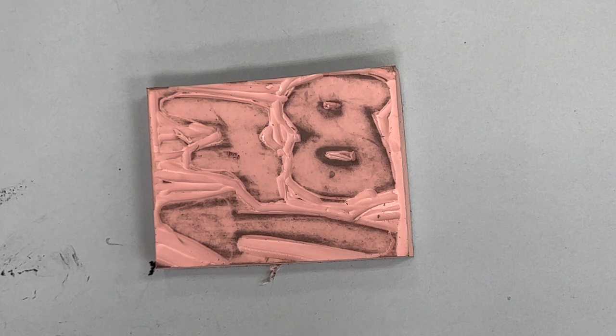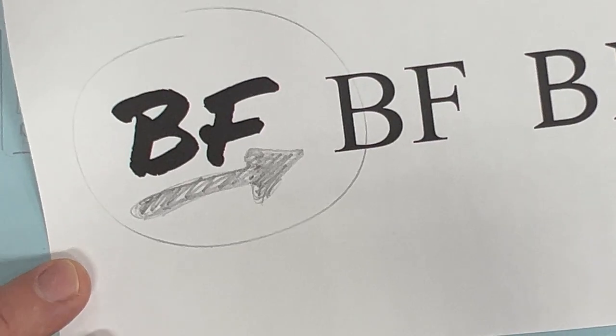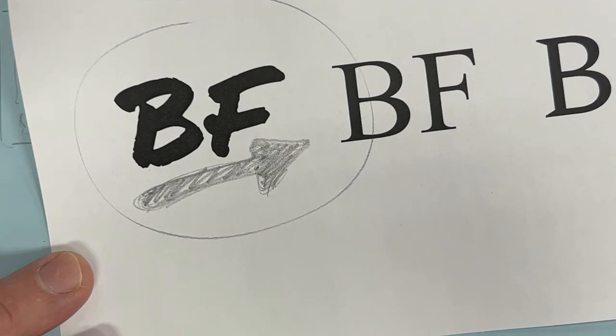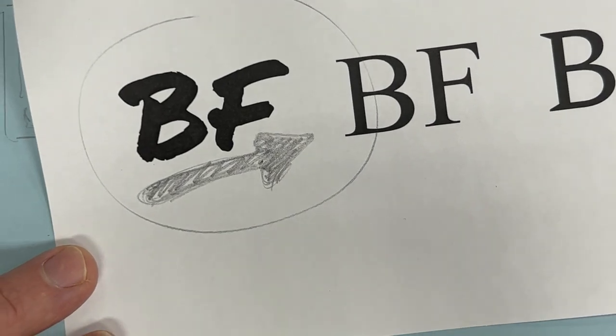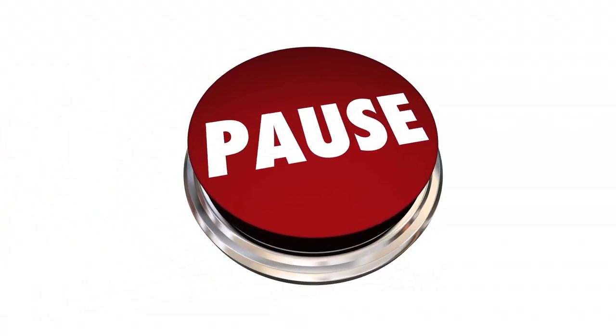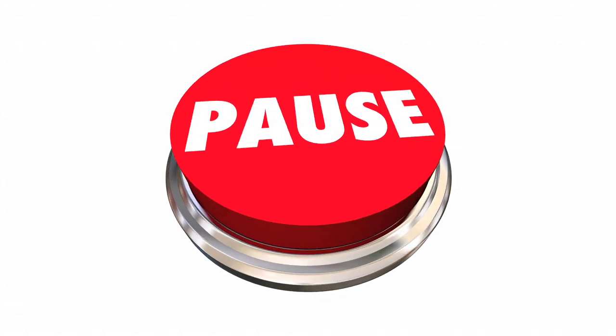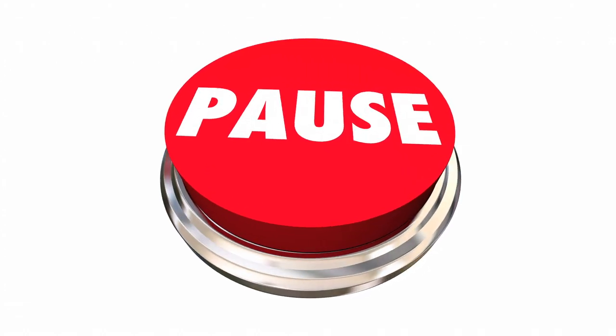I'm hoping that when I stamp this one, I'll again get the letters B and F in black with an arrow pointing to the right. Do you think that's what will happen this time? Pause the video to either draw or discuss what you think will happen this time.